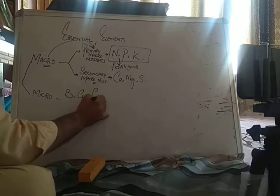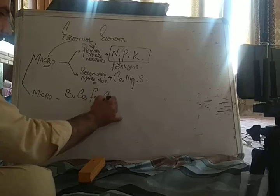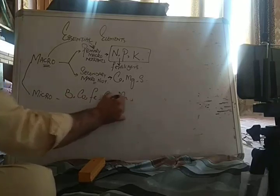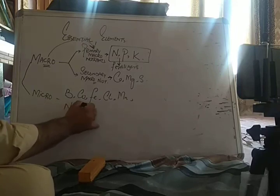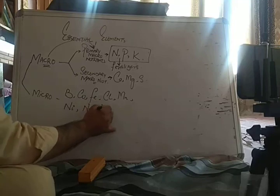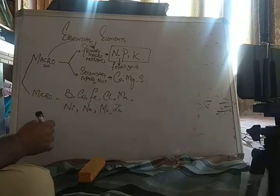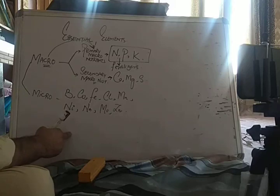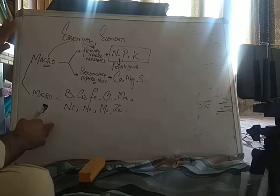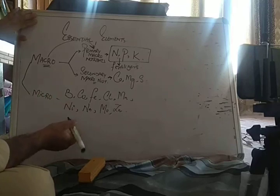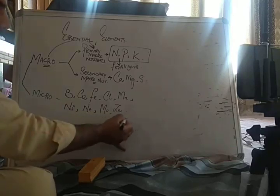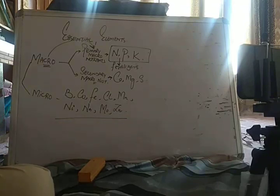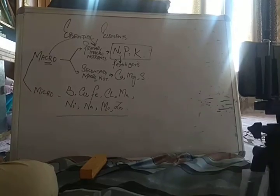Micronutrients — also called minor elements or trace elements — include: boron, copper, iron, chloride, manganese, nickel, sodium, molybdenum, and zinc. This concludes today's lecture on essential elements, non-mineral elements, and mineral elements. In tomorrow's lecture, we will move ahead to role classifications.